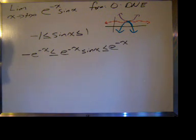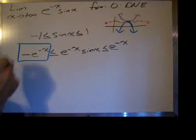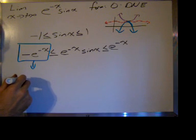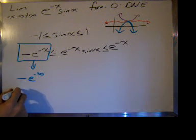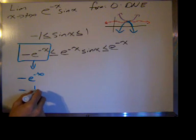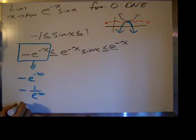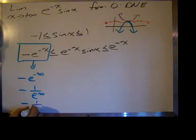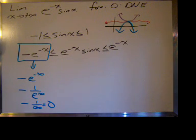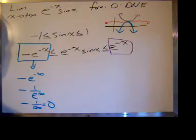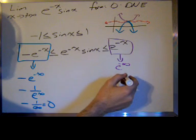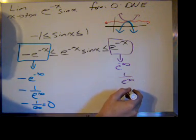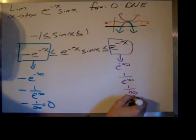So we look at the limits on each end. The limit as x goes to positive infinity of negative e to the negative x goes to negative e to the negative infinity, which is negative 1 over e to the infinity, which is negative 1 over infinity, which goes to 0. And then e to the negative x similarly goes to e to the negative infinity, which is 1 over e to the infinity, which is 1 over infinity, which is 0.